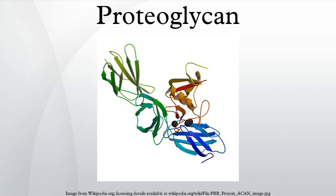Proteoglycans are a major component of the animal extracellular matrix, the filler substance existing between cells in an organism. Here they form large complexes, both to other proteoglycans, to hyaluronan, and to fibrous matrix proteins. They are also involved in binding cations and water, and regulating the movement of molecules through the matrix. Evidence also shows they can affect the activity and stability of proteins and signaling molecules within the matrix, and serve as lubricants.